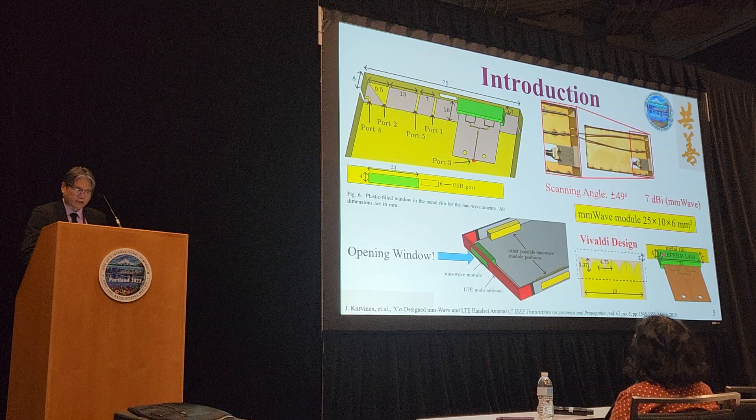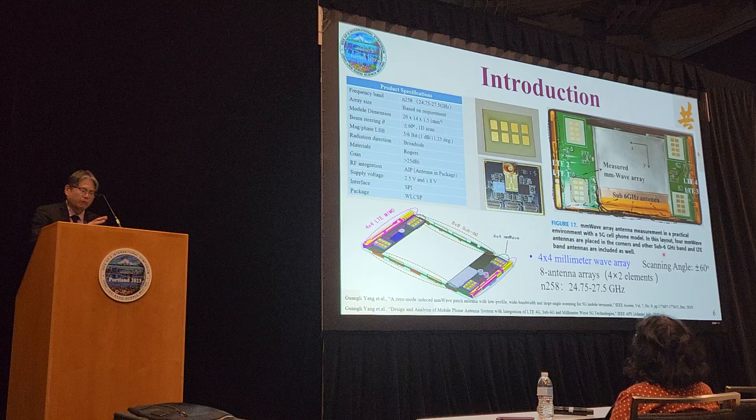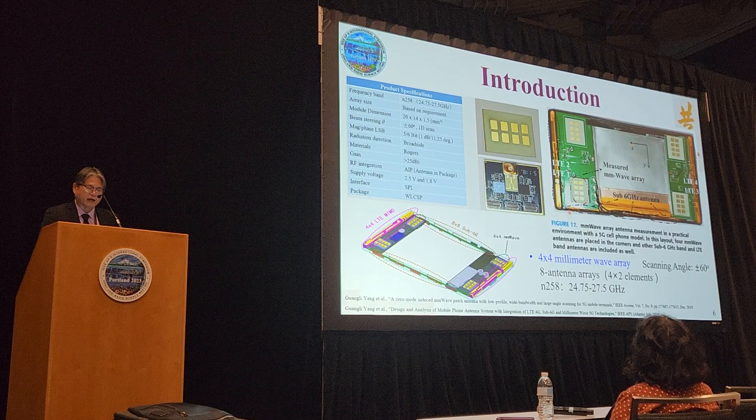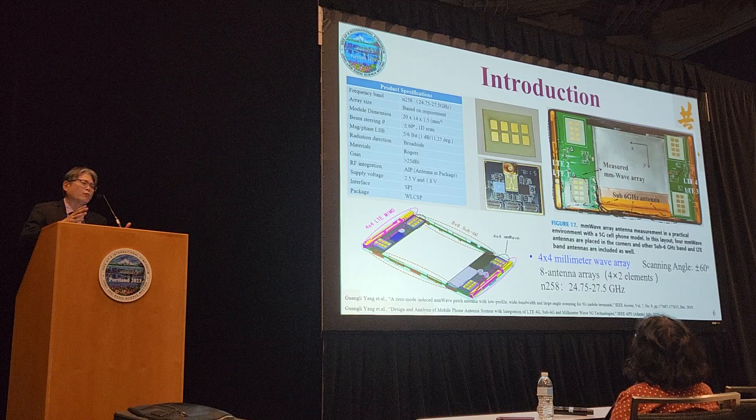The next design shows an open window. Another design from Professor Guangli Yang from Shanghai University: he designed a 2x4 array antenna and tried to put it at the four corners of the smartphone. There are sub-6 GHz antennas on both sides and a 4G antenna. But Professor Yang doesn't discuss what happened when they tried to put the cover on top of the millimeter wave antenna.